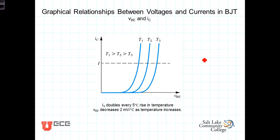And we notice here also that as the temperature increases, the graphs shift for two reasons. One, I sub S, the saturation current, doubles every 5 degrees C rise in temperature. And then also VBE, the base emitter voltage, decreases about 2 millivolts every degree centigrade as the temperature increases.